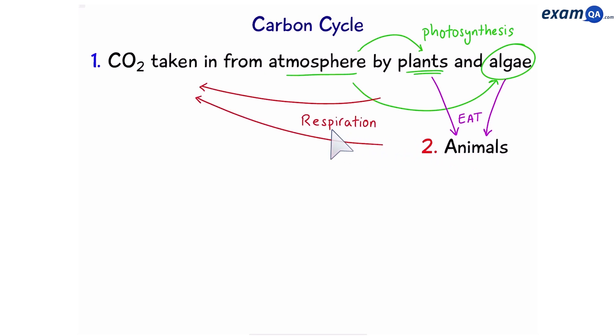Plants and animals respire and release carbon dioxide back into the atmosphere. Eventually plants and animals will die. Decomposers break down the plants and animals and also release carbon dioxide back into the atmosphere.